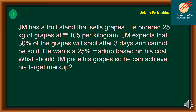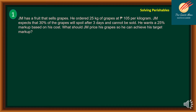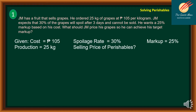Problem number one: JM has a fruit stand that sells grapes. He ordered 25 kilograms of grapes at 105 pesos per kilogram. JM expects that 30 percent of the grapes will spoil after three days and cannot be sold. He wants a 25 percent markup based on his cost. The given values are: cost = 105 pesos, spoilage rate = 30%, markup = 25%, production = 25 kilograms, and selling price is unknown.